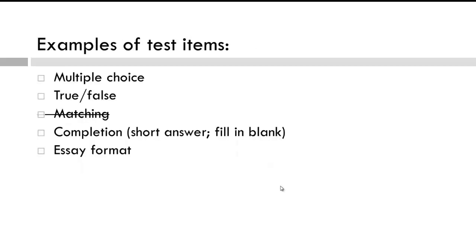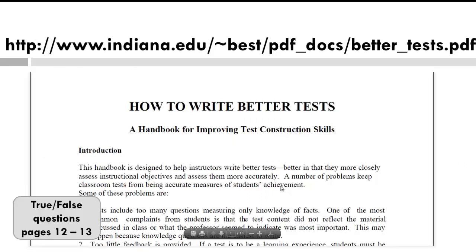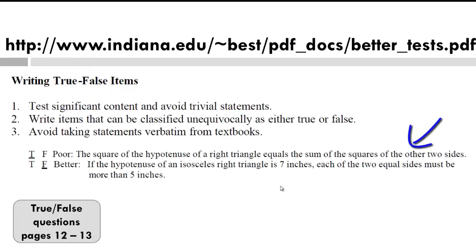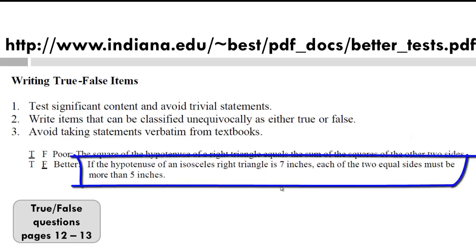Let's now go to true and false types of questions. Please go to this document and read about true and false questions on pages 12 to 13. Once you're finished, please come back. Now let's look at this example. Based on what you just read, what is the problem? Pause to consider. What is this first test item trying to assess? The first item seems to have been extracted right from a textbook, whereas a better test item has test takers actually apply the information and come up with a response.